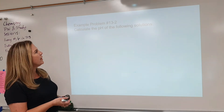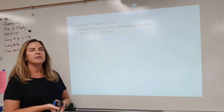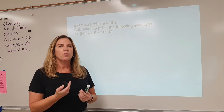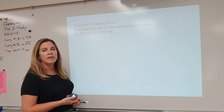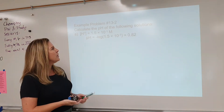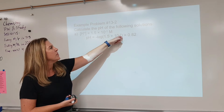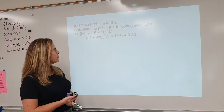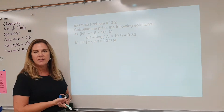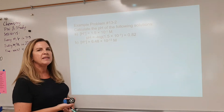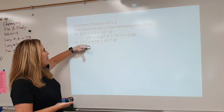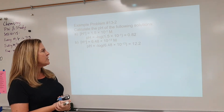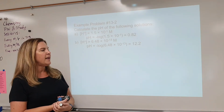Example 13-2: calculate the pH of the following solutions. If the hydrogen ion concentration is 1.5 times 10 to the minus 1 molar, we use the definition pH equals the negative log, plug in our hydrogen ion concentration into our calculators, and find that the pH is 0.82. If the hydrogen ion concentration is 6.48 times 10 to the minus 13, then pH equals the negative log of 6.48 times 10 to the minus 13, giving a pH of 12.2.